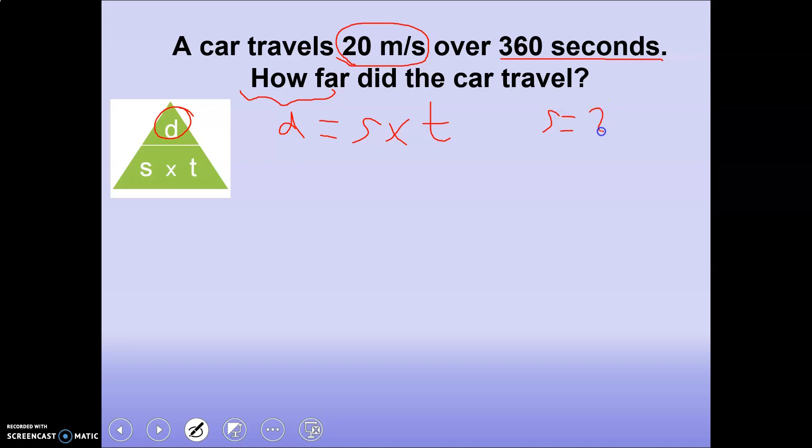We know that the speed was 20 meters per second, and we know that the time was 360 seconds. So we have distance equals a speed of 20 times a time of 360. So if we do 2 times 36, that's going to give us 72. Add our zeros back in, so we have two zeros. So there's going to be 7,200.